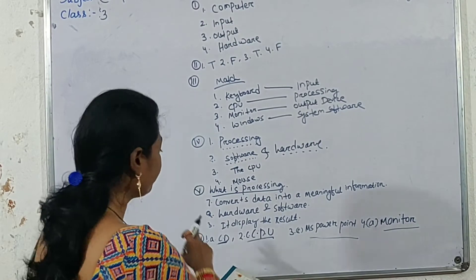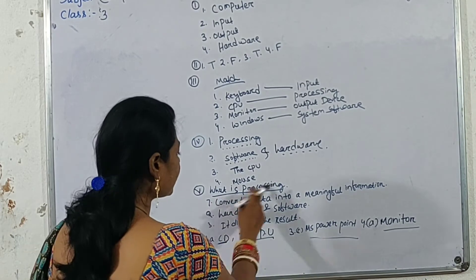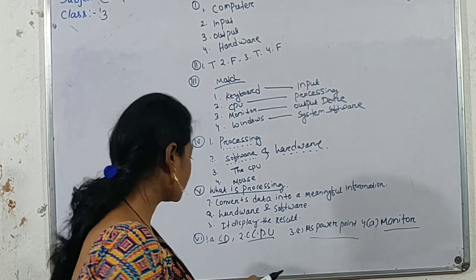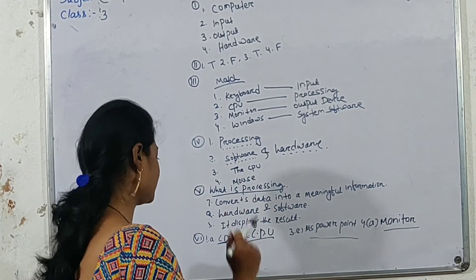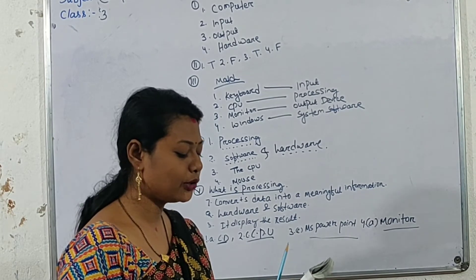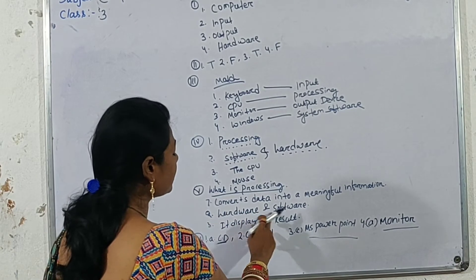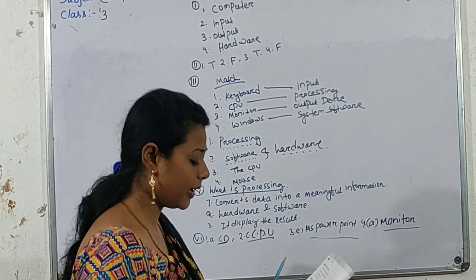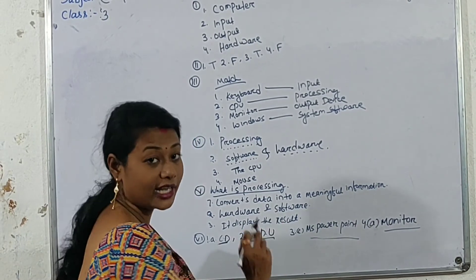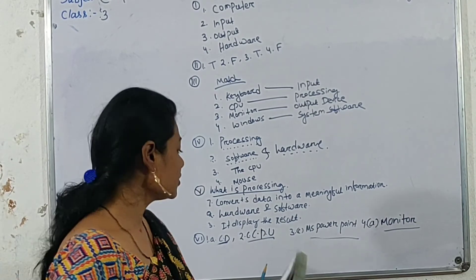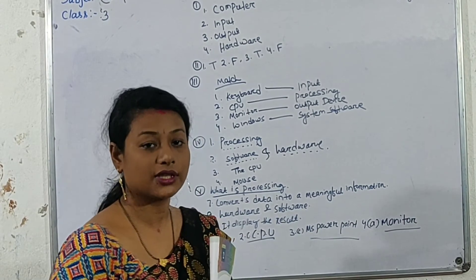Now come to our fifth point: the question and answer, short answer. First question: What is processing? Converting data into meaningful information is called processing. Second number: What are the two basic parts of a computer system? The basic parts of a computer system are hardware and software. Third: Define output — output displays the result. So students, in today's class we discussed our computer first unit question and answer.